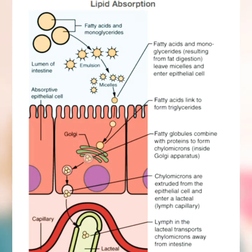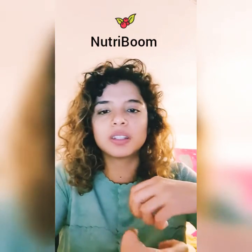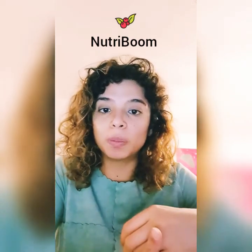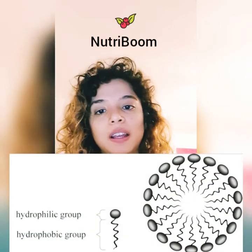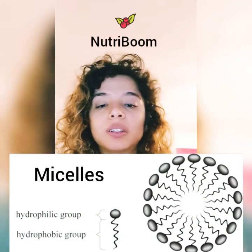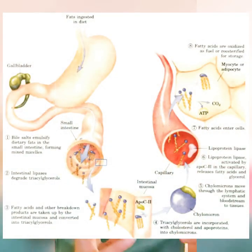The fat-soluble vitamins A, D, E, and K are also digested at the same time. Since fats don't dissolve or get absorbed properly on their own, they get emulsified into fat globules called micelles, which are then further broken down by pancreatic enzymes into fatty acids, cholesterol, and other components.